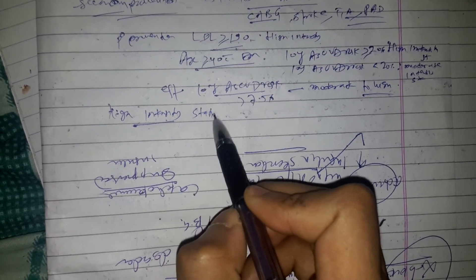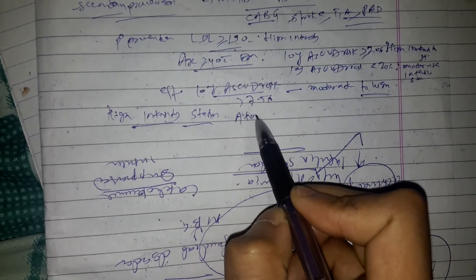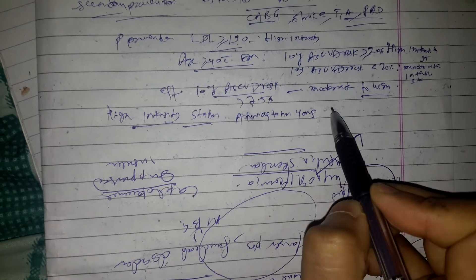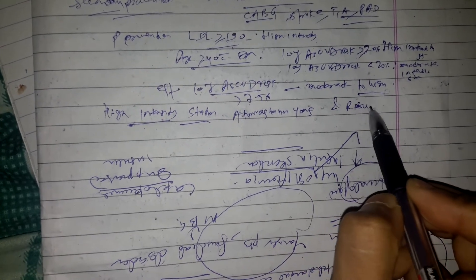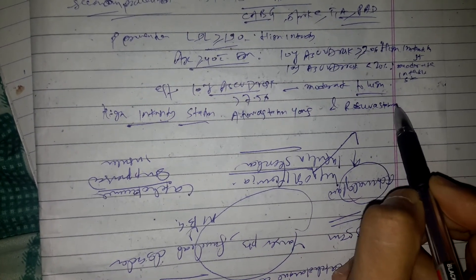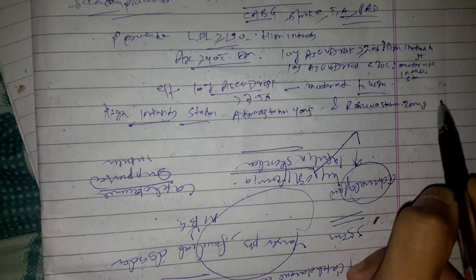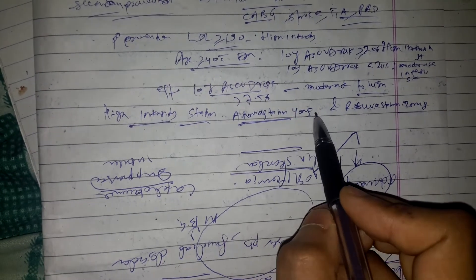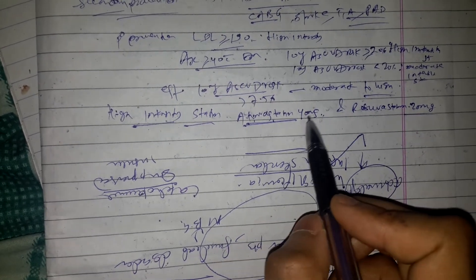Atorvastatin 40 mg and rosuvastatin 20 mg - this is high intensity statin.